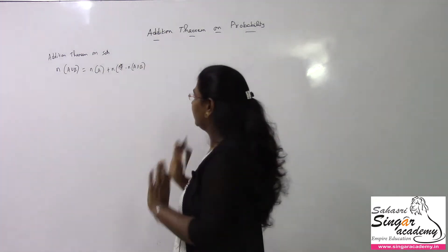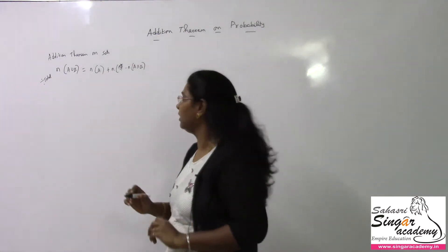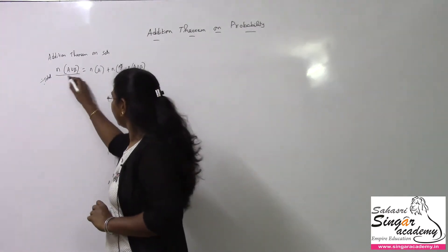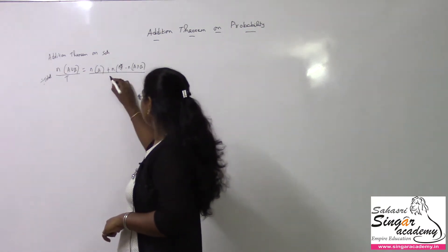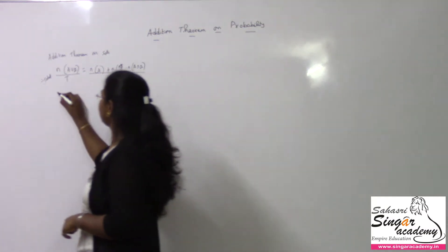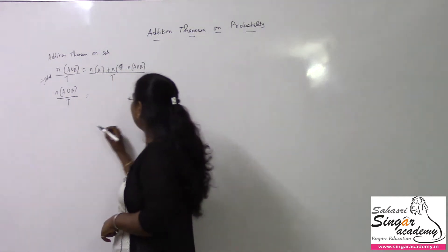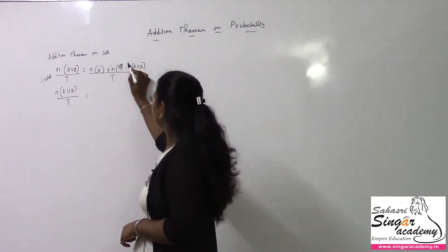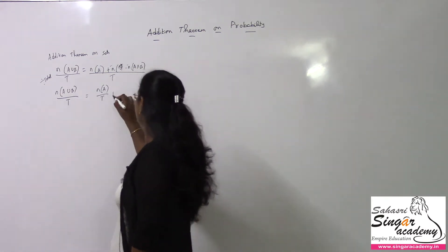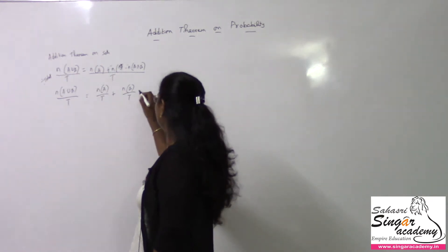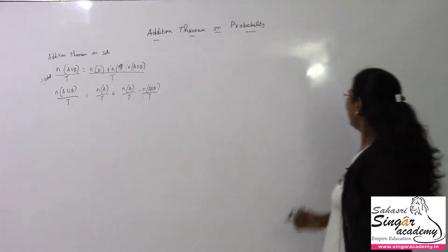If I divide by the total number throughout, the left-hand side becomes n(A ∪ B) divided by total, and the right-hand side becomes n(A)/total + n(B)/total − n(A ∩ B)/total. There are plus and minus in the numerator, so no disturbance — I can split directly.